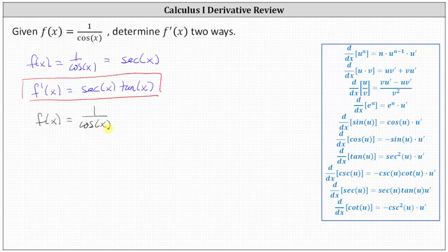Recall the quotient rule is a derivative of u divided by v with respect to x equals v times u prime minus u times v prime, all divided by the square of v.